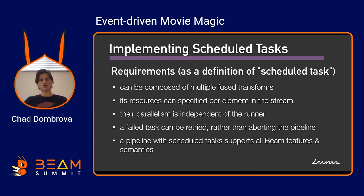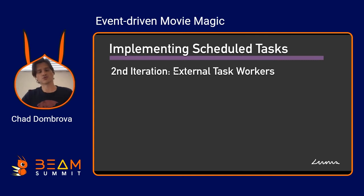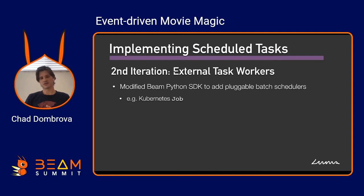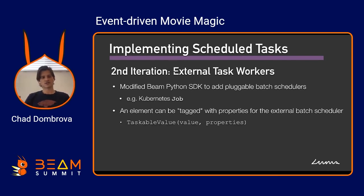We went through more than two dozen different proof of concepts and came up with the concept of external task workers. To achieve this we had to modify the Beam Python SDK, which is not our first choice but ended up being by far the most powerful. We added a concept of a pluggable batch scheduler — for example, you could hook up Kubernetes as a batch scheduler, which has a batch job schema type. An element as it flows through your pipeline can be tagged with properties to indicate that it should be delivered to that batch scheduler.